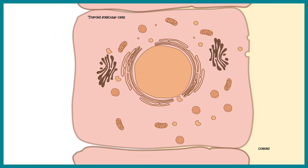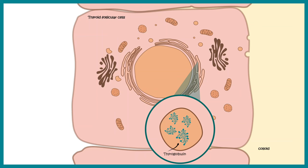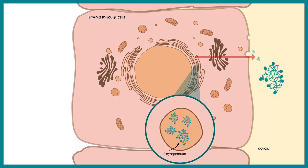Let's zoom into the thyroid follicular cell to understand the process better. Thyroglobulin is actually a chain of tyrosine molecules, because thyroid hormones are tyrosine derivatives. This chain is secreted via the cellular secretory machinery — it travels from the ER to the Golgi, and from the Golgi it takes the excretory route and is ultimately released into the colloid.